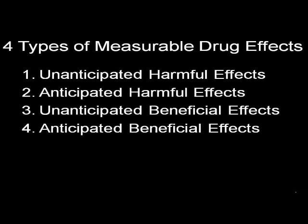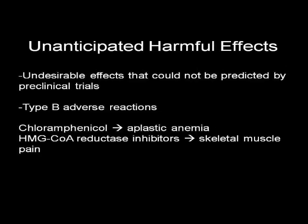There are four different types of measurable drug effects: the unanticipated and anticipated harmful effects, and the unanticipated and anticipated beneficial effects. Unanticipated harmful effects are the undesirable effects of drugs that couldn't have been predicted on the basis of their preclinical pharmacologic profile, mechanism of action, or results of pre-marketing clinical studies. These effects are most often type B adverse reactions.